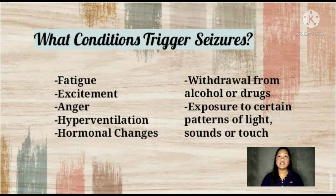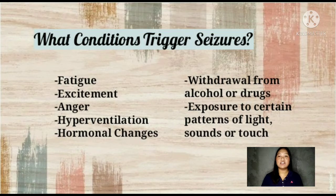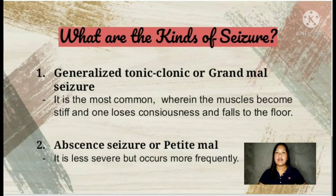What are the conditions that trigger seizures? These are fatigue, excitement, anger, hyperventilation, hormonal changes, withdrawal from alcohol or drugs, and lastly, exposure to certain patterns of light, sounds, or touch. There are different kinds of seizures, and the first is the generalized tonic-clonic seizure, also known as grand mal seizure.